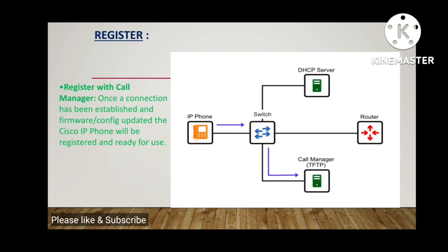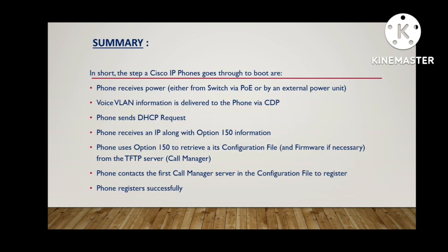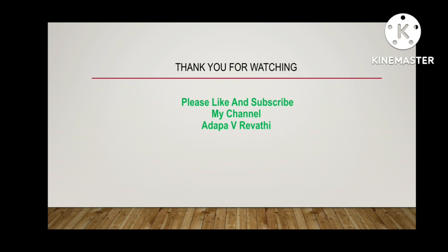The last step is registering. The phone gets configuration files from the TFTP server, which contain a list of CUCM IP addresses — there will be three CUCM IP addresses in the configuration list. The phone will register with one of the call managers in that list. Finally, the phone gets registered and is ready to make calls. This is the summary — thank you for watching, please like and subscribe my channel. Thank you, bye.